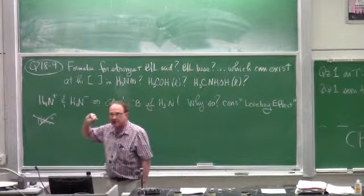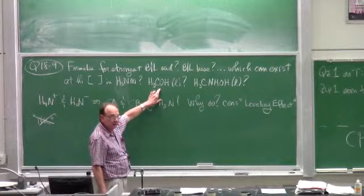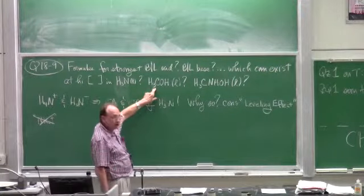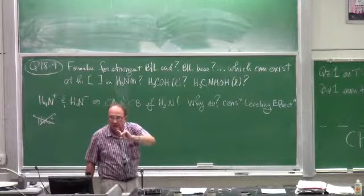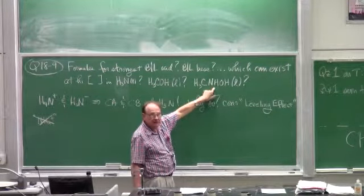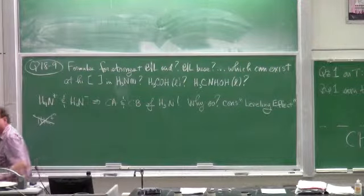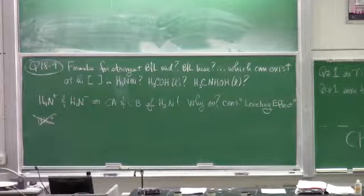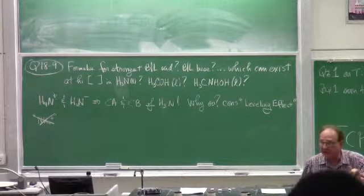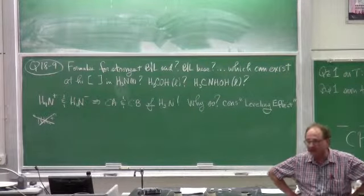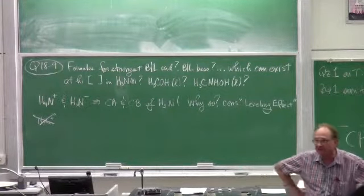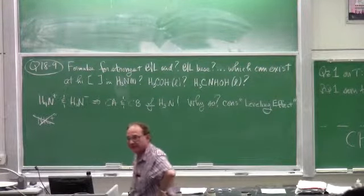Write the formula for the strongest acid which can be found in high concentration in methanol as solvent and in hydroxylamine as solvent, and then write the formula for the strongest base which can be found in high concentration in each of those solvents. That means you've got to write the formula for the conjugate of each. This is a structure question — it's your responsibility to be able to get at structure all the time. Everything you need to know is in chapter 23 of our notes.